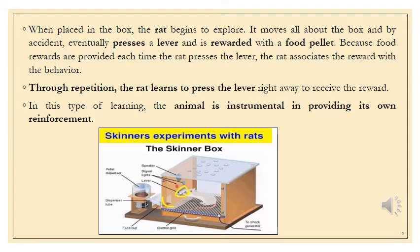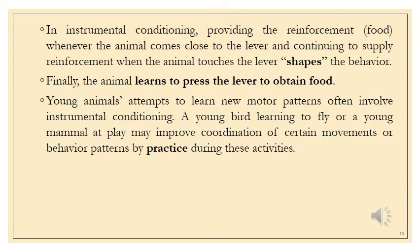In this type of learning, the animal is instrumental in providing its own reinforcement, because a voluntary action is being performed. In operant conditioning, providing the reinforcement — which is food in this case — serves as a reward for the organism. Whenever the animal came closer to the lever, reinforcement was supplied, and if it got food it would press the lever. That touching of the lever would shape the animal's behavior for the rest of its life, ultimately learning to press the lever to obtain food.